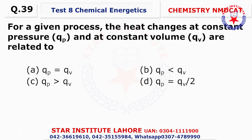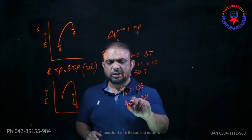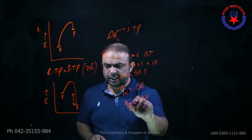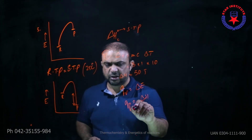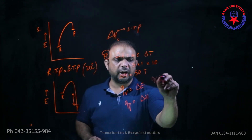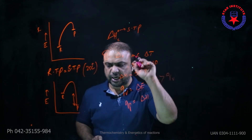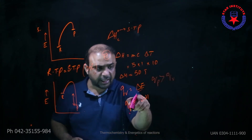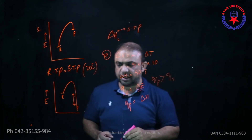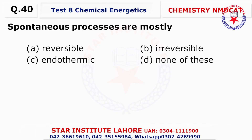Question number thirty-nine: For a given process, the heat changes at constant pressure and constant volume — at constant pressure the heat change is delta H (qP), which is always greater than qV, because delta E deals directly with heat.